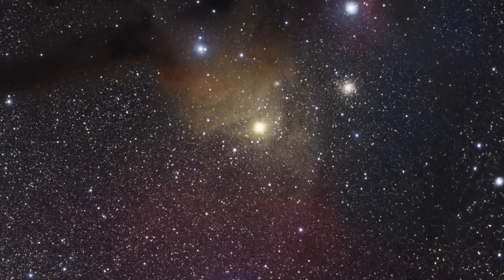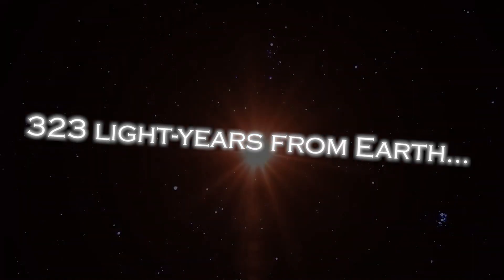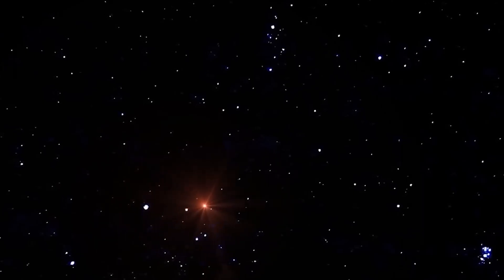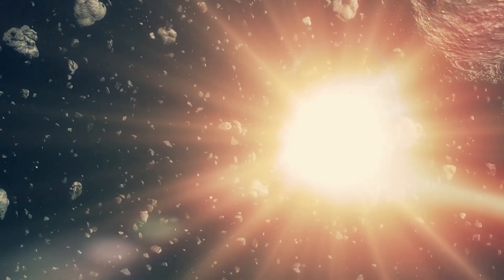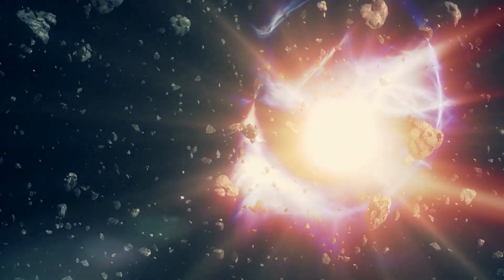Polaris is approximately 323 light-years from Earth, which means that the light we receive from this star today was actually emitted 323 years ago. This great distance means that if Polaris were to explode today, we would not be aware of it until 320 years later.